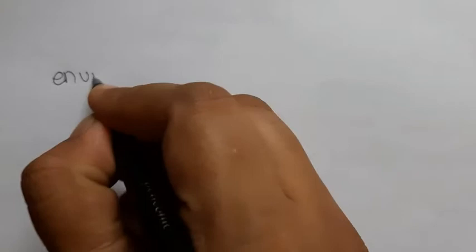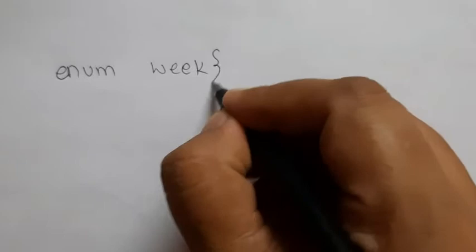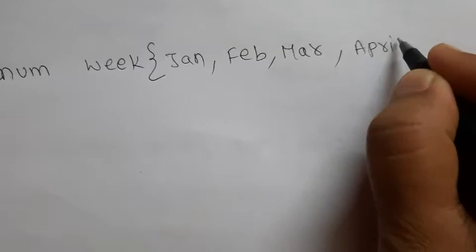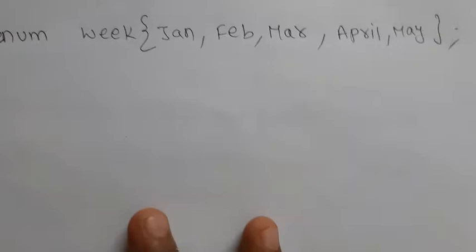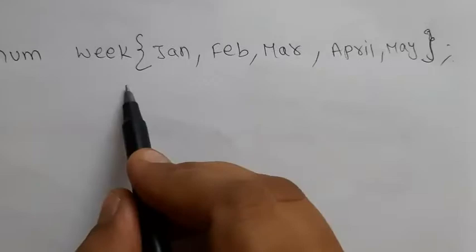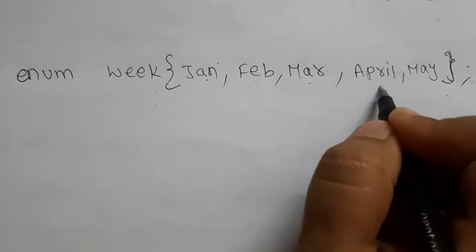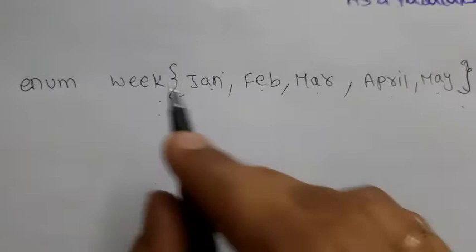Let's take one more example. I'll create another data type: enum week — but actually let's use months. Open the curly bracket and write: jan, february, march, april, may — like this you can mention all 12 months; I'm listing only up to may, then close the bracket and semicolon. As you'll learn, jan defaults to 0, february to 1, march to 2, three, four.